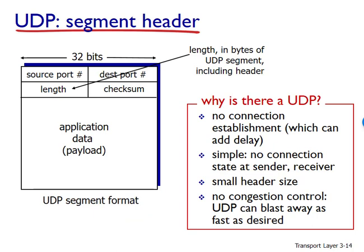Take a look at the UDP segment structure there on the left of the screen. The application data occupies the data field of the UDP segment. For example, for DNS, you'll remember that the data field contains either a query message or a response message. For a streaming audio application, audio samples fill the data field. The UDP header has only four fields, each consisting of two bytes or 16 bits. The port numbers allow the destination host to pass the application data to the correct process running on the destination end system.